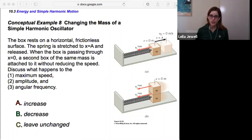...changing the mass on a simple harmonic oscillator. The box rests on a horizontal frictionless surface. The spring is stretched to x equals A and released. When the box is passing through x equals zero, a second box of the same mass is attached to it without reducing the speed. Discuss what happens to the (1) maximum speed, (2) amplitude, (3) angular frequency. So I'd like for you to think this through for each of the three parts here. Come up with the answers for them before you move on. So go ahead and pause the video now.